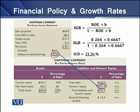The firm still needs $53.4 to finance its growth in assets. If the firm doesn't want to increase its equity, then the firm will increase its total debt by $53.4.